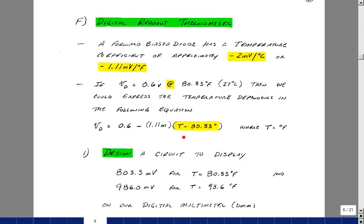And then, as temperature increases, say, 1 degree Fahrenheit, so we'd have 81.33, this becomes 1, and you multiply that by the temperature coefficient, and you would wind up getting 1.11 millivolts decrease and subtracting that from 0.6. So, this is an equation that would describe the voltage across the diode versus temperature.